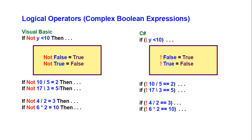If NOT 17 integer division 3 equals 5 — again, that is a true mathematical expression, but the boolean expression is false, because NOT true is false. We see the opposite in the next two expressions: 4 divided by 2 equals 3 is false, but if it's NOT false, then it's true. 6 times 2 equals 10 is false, but NOT false is true. In C#, rather than the word NOT, we use an exclamation mark — the same character we saw in the not-equals operator. So the exclamation mark is the NOT character: NOT false is true, NOT true is false. The exclamation mark in front of an expression reverses it.